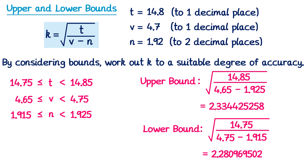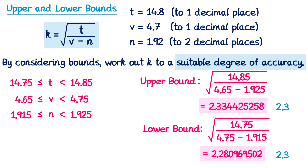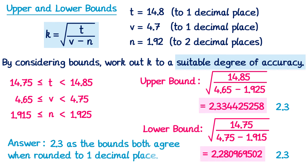Remember the wording asked for a suitable degree of accuracy. We look at the upper and lower bounds and try to find a value they both round to. Rounding both to the nearest integer gives 2 for each — they agree, but can we do better? Rounding to one decimal place: both give 2.3 — they agree, so that's a possible answer. Rounding to two decimal places: the upper bound gives 2.33 and the lower bound gives 2.28 — they no longer agree, so that's not suitable. Therefore the best answer is k = 2.3, and we justify this by stating that both bounds agree when rounded to one decimal place.